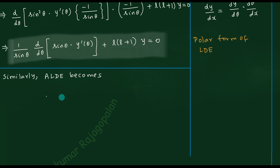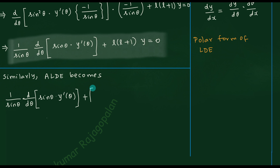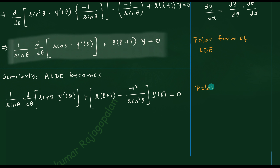Similarly, we can now write down the associated Legendre differential equation in polar form. We simply copy everything and add one extra term: the polar form of the associated Legendre differential equation (ALDE) is (1/sin θ) d/dθ[sin θ · y′(θ)] + [l(l+1) − m²/sin²θ] y = 0. Adding the term −m²/(1 − x²), where 1 − x² = sin²θ, gives the ALDE. This is the polar form of the ALDE.